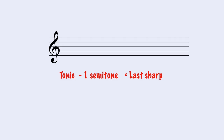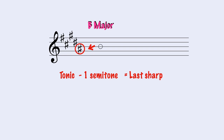Let's have another example. If we want to know how many sharps B major has, we take B as our tonic, go down a semitone and find our last sharp — La. Then we add the sharps in order until we reach La: Fa Do Sol Re. B major has five sharps.